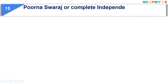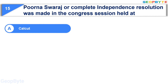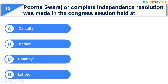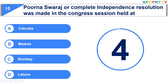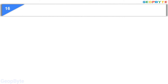Moving to the fifteenth question: the Purna Swaraj or Complete Independence Resolution was passed in the Congress session held at — Option A: Calcutta, Option B: Madras, Option C: Bombay, Option D: Lahore. Your time starts now. Your time is up and the correct answer is Option D: Lahore.